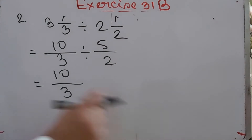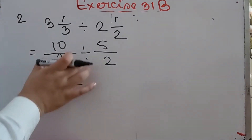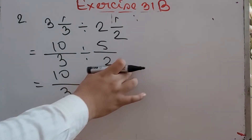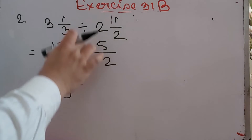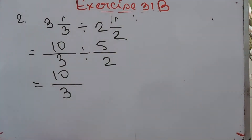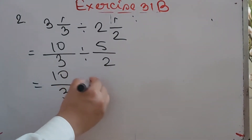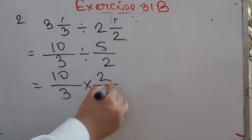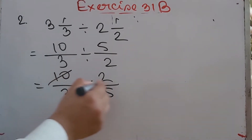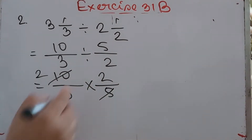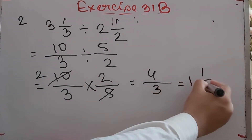To divide one fraction by a second fraction, multiply the first by the reciprocal of the second. The reciprocal of 5/2 is 2/5. So 10/3 × 2/5: 10 divided by 5 = 2, then 2×2 = 4/3, which equals 1 whole 1/3.